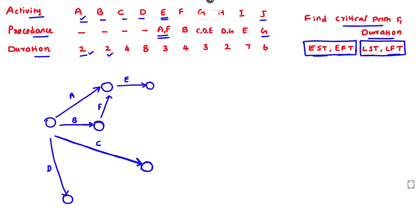For activity G, the precedence activities are C, D, and E — but we cannot directly join E to the C activity node because E alone is the precedence activity of I. So we need to introduce dummy activities to correctly represent these relationships in the network.